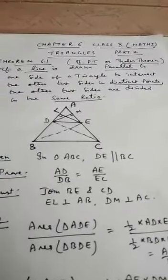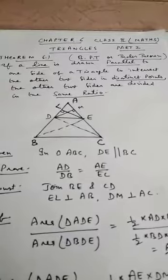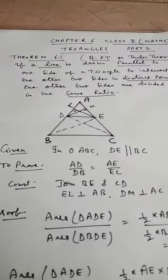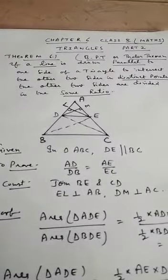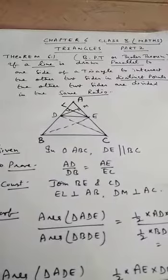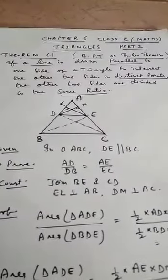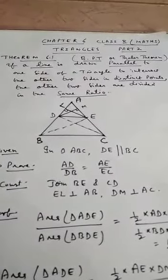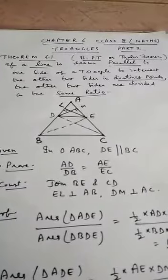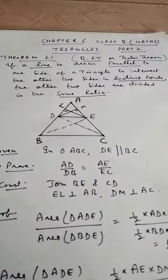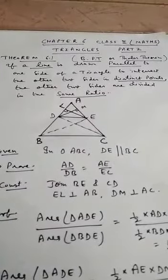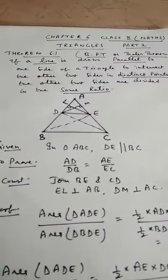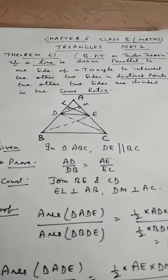Look at the given figure. I have a triangle ABC in which DE is parallel to BC, intersecting AB and AC at points D and E. In triangle ABC, DE is parallel to BC.